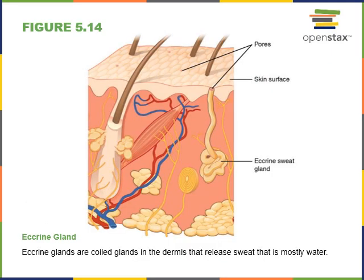Here we can see an illustration of an eccrine sweat gland. The eccrine sweat gland is the most common type of sweat gland and produces a watery sweat in order to cool the body. They have a coiled tubular structure with a stratified cuboidal epithelium, and the duct opens at the surface of the skin through a pore that releases this watery secretion to help cool the body down.